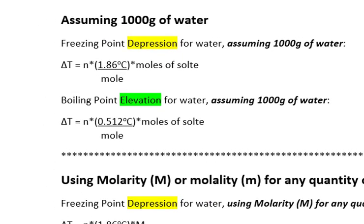The freezing point depression equation should look very familiar. Delta T, the change in temperature, equals N, the number of ions in the formula unit of an ionic compound, or 1 if it's a molecular compound. So N times 1.86 times the moles of the solute.